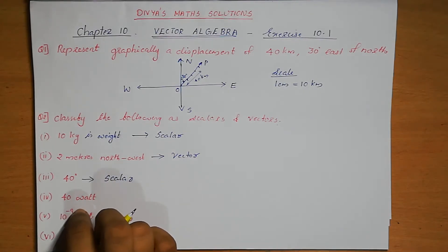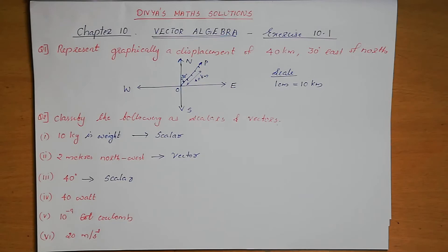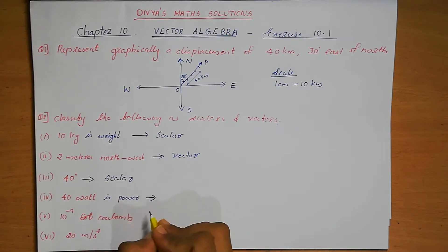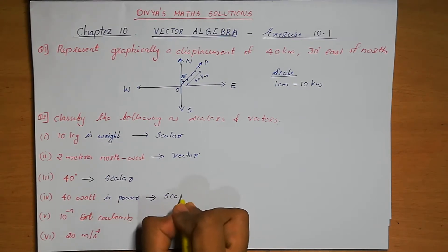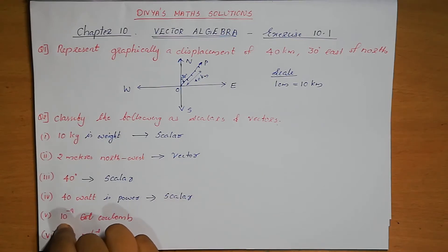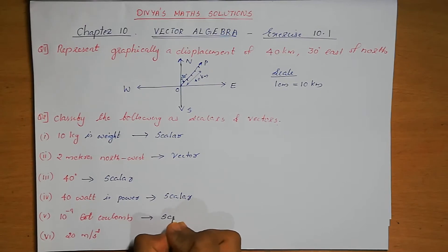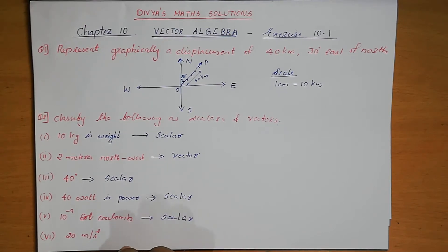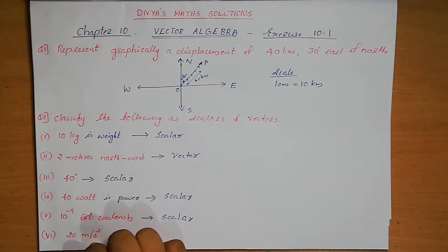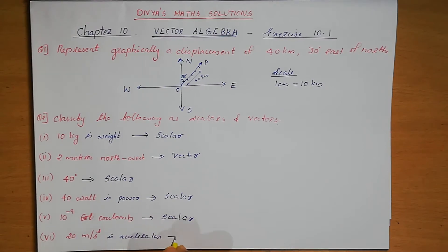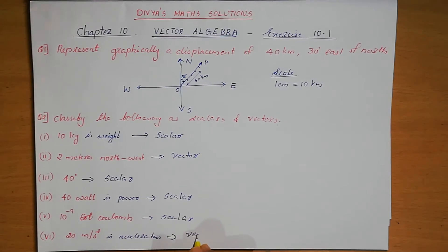Next, 40 watt. Watt is the unit of power. Power has only magnitude, so this one is scalar. Next, 10 to the power minus 9 coulomb. Coulomb means electric charge, which has only magnitude and there is no direction, so this is also scalar. Next, 20 m per second square. Metre per second square is the unit of acceleration, which has magnitude as well as direction. So 20 m per second square is a vector.